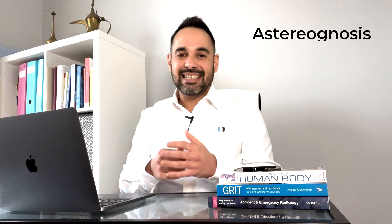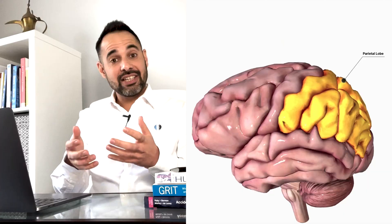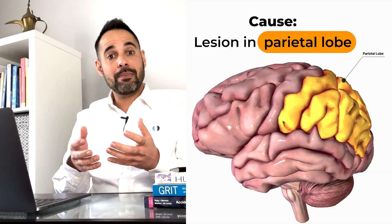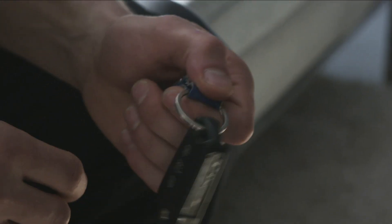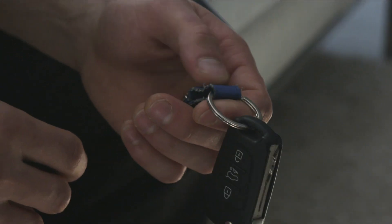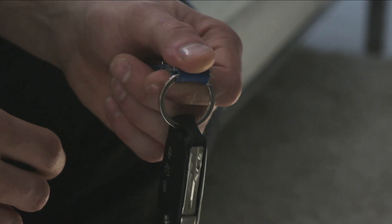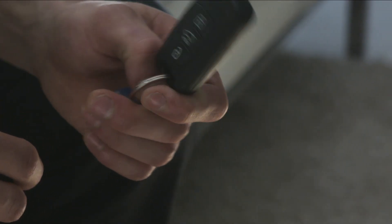Next we have astereognosis, which is a condition whereby your patient is unable to identify objects by touch. You may give your patient something with their eyes closed and they are feeling it in their hands but they can't quite interpret what it is — astereognosis.